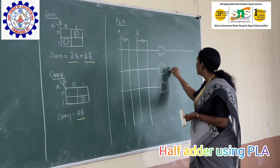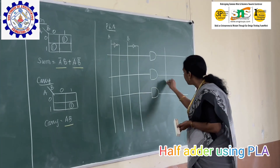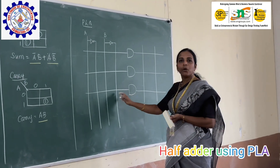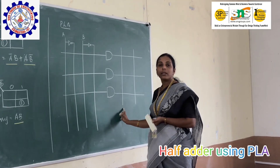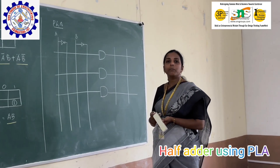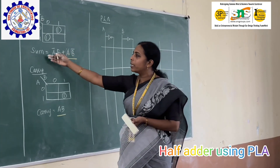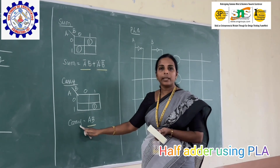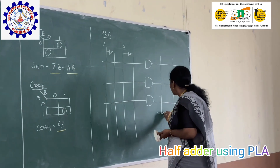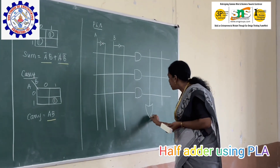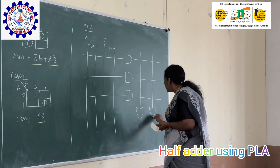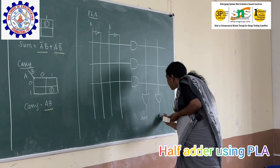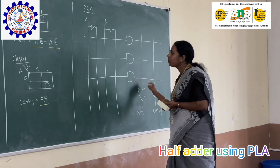The AND gates are fused with OR gates depending on the input-output combinations. The number of OR gates depends on the number of outputs. We have two outputs — sum and carry — so we need two OR gates. The AND gate count depends on the number of min terms, and the OR gate count depends on the number of outputs.